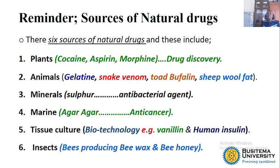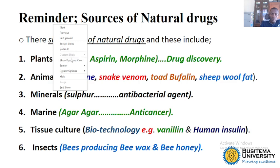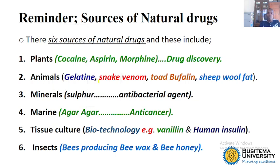We talked about plants being the largest sources of natural drugs, providing us drugs such as morphine, aspirin, cocaine, codeine. Then we have animals, for example dogs of snakes, providing venom that we use as anticancers.